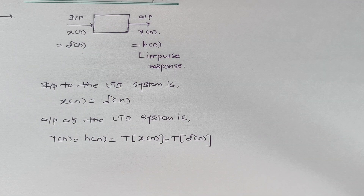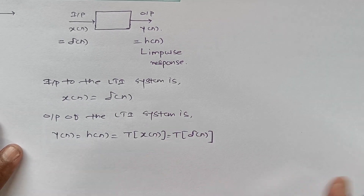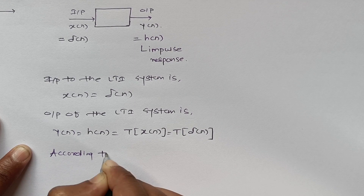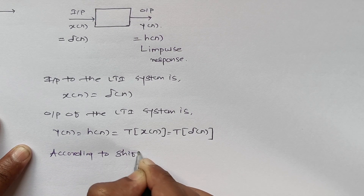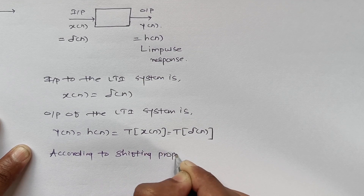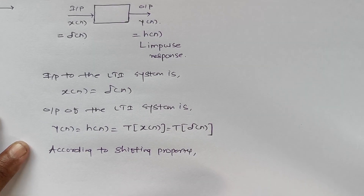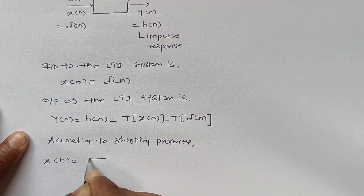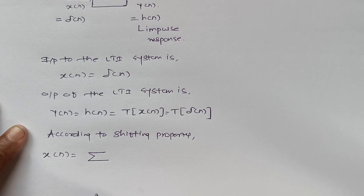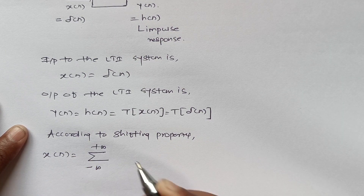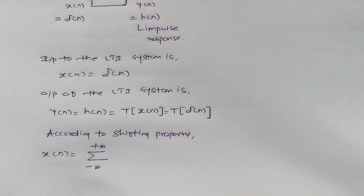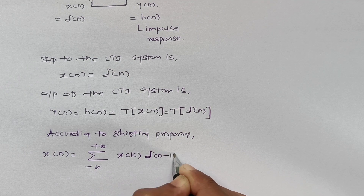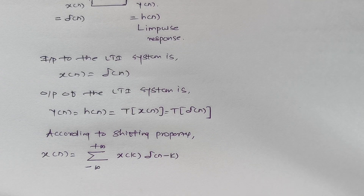Now we apply the same shifting property that we used for the continuous time LTI system. According to the shifting property, we can represent the input signal as a shifted version and linear combination. This is the summation from minus infinity to plus infinity of the original signal x of k multiplied by its shifted version del of n minus k.